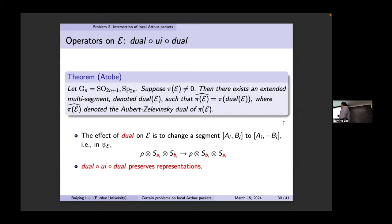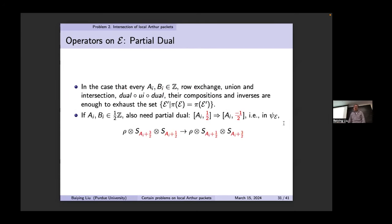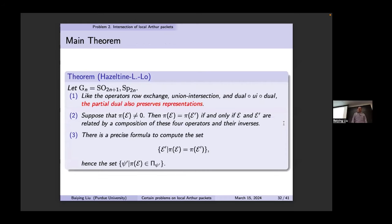The fourth operator is the partial dual: instead of applying the dual to all pieces, you only do it whenever you see a specific pattern — switching the half to negative half in the case. The main theorem, joint with Hasegawa and Law: the operators row-exchange, uni-intersection, dual-UI-dual, and also partial dual, all preserve representations. So given π coming from one datum, you run through all these operations including uni-intersection, and you can get all data corresponding to the same representation.